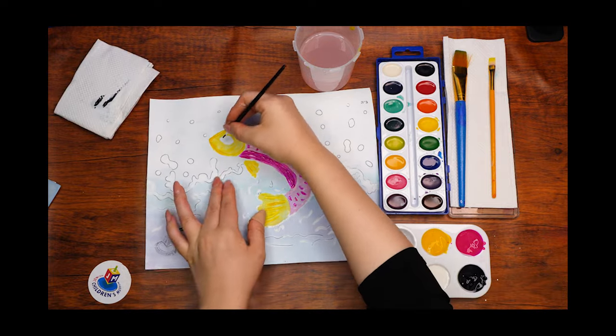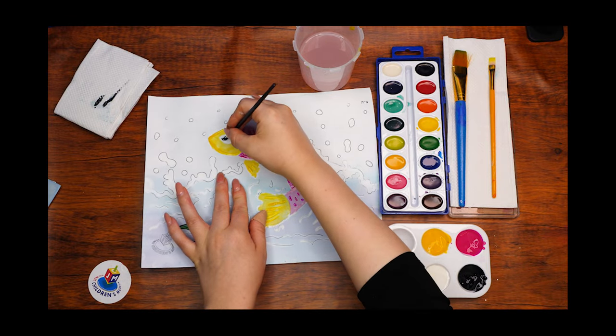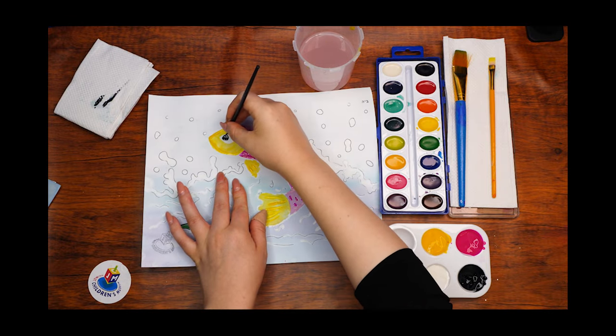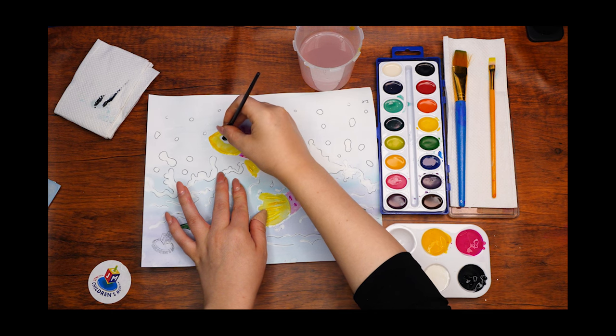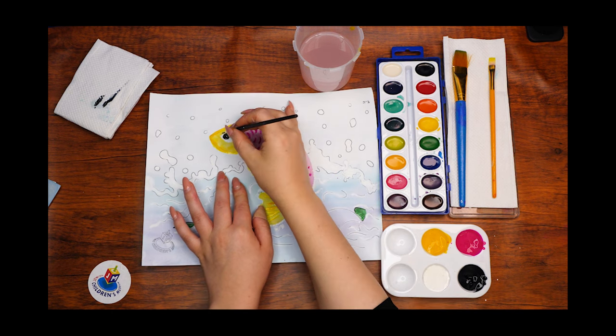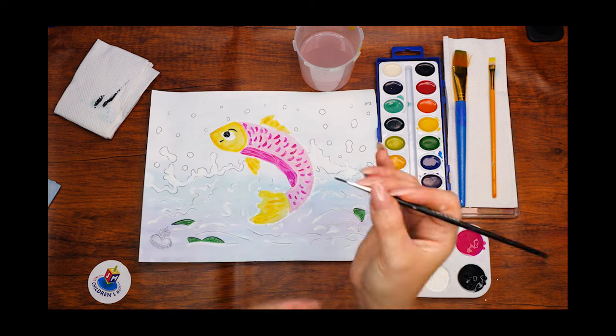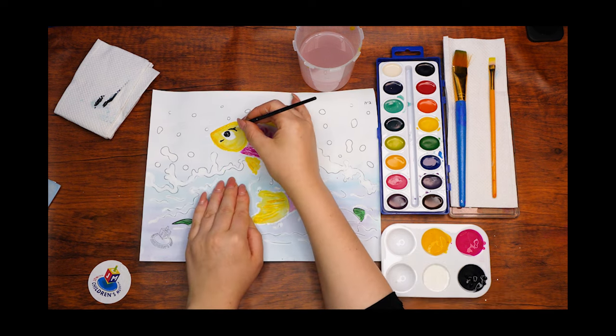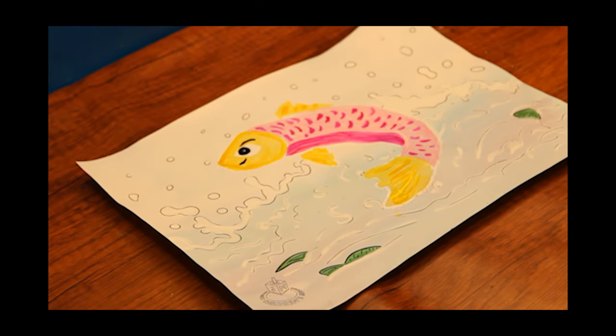Lastly, we will paint the fish's eye black. Here's a fun fact about fish you may or may not know, which is that its eyes never close. We are going to add a couple of short lines near the fish's eye to give it some personality. And with that, we're all done. Enjoy your special painting, and don't forget to come back next week.